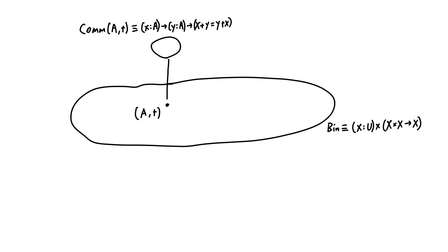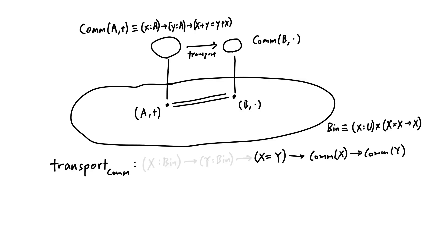Using universe and identity type, we can capture what it means for two equal things to share all possible properties. Consider the collection of all types in U with a binary operation. Call the type Bin for binary. A property about elements of Bin is represented by a type family over Bin. For example, commutativity can be expressed as so. If two elements of Bin are equal, we expect that if one is commutative, then so is the other. We can indeed define a function called transport that takes a proof of x equals y and returns a proof that if x is commutative, then y is commutative. Simply define it to be the identity function on refl, and we are done. After all, the only constructor for x equals y is when x and y are definitionally the same.